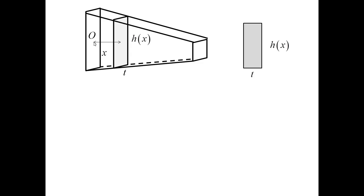The two-dimensional view of the cross-section is shown here. That's the base T, which appears to be perpendicular to the plane of the slide on this picture, and H of X is the height.